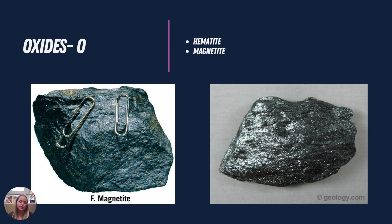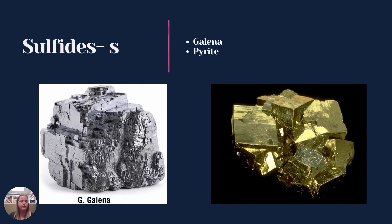Oxides contain a lot of oxygen and are also our metallic minerals. We have magnetite and hematite — hematite has a specular form, and magnetite is magnetic. Then we have sulfides: galena and pyrite. Pyrite is fool's gold. Both of these are also metallic minerals that contain a lot of sulfur.